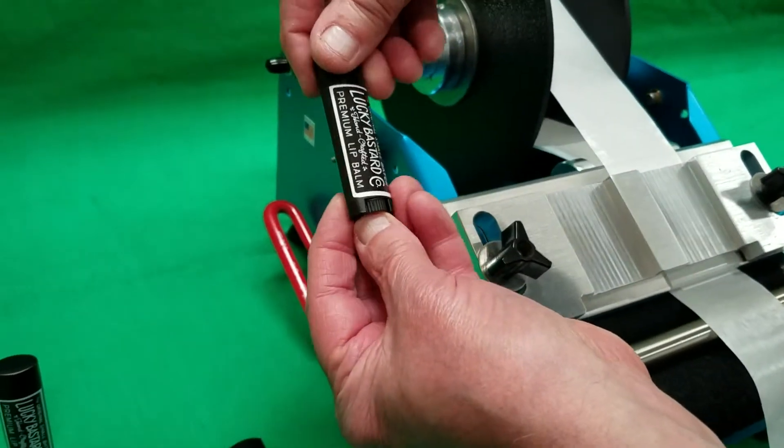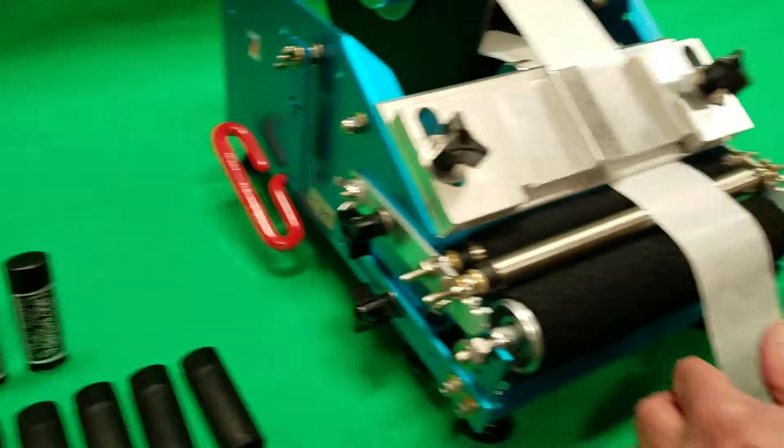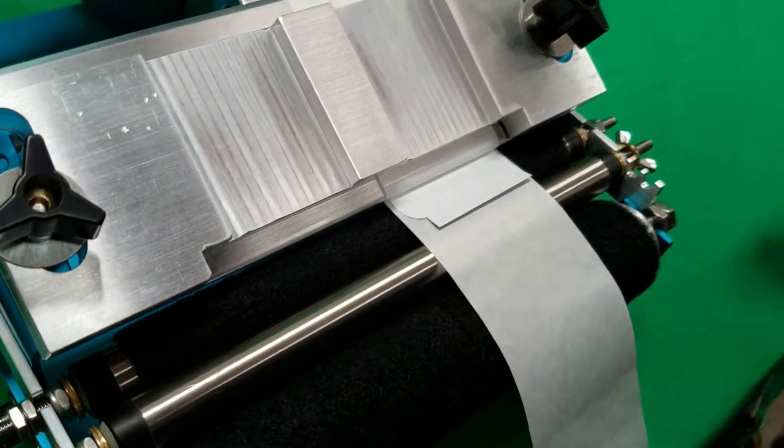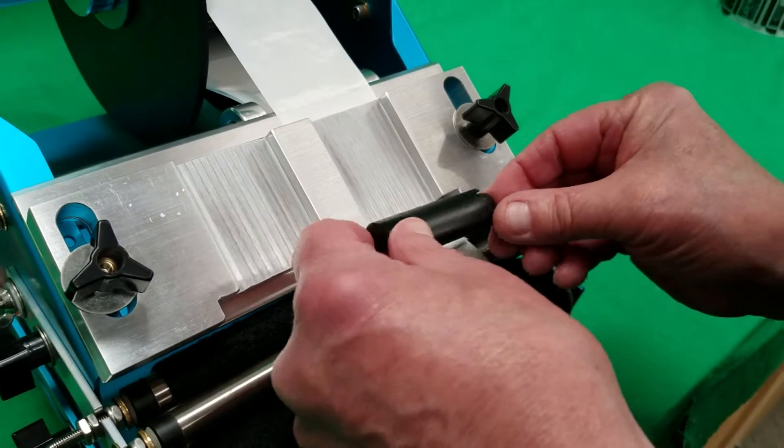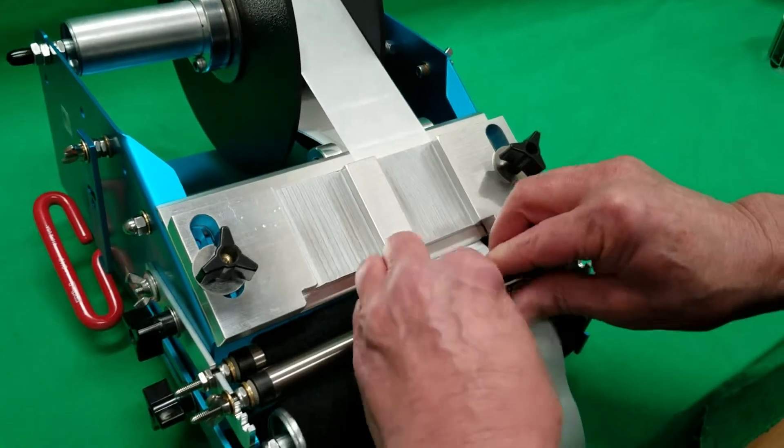You can see the label is applied in the perfect location on it and I will demonstrate that again. The label is pulled out to the predetermined location, goes into the nesting area, teeters down, and the label is applied.